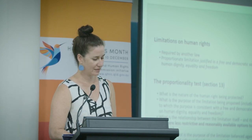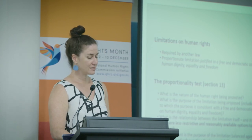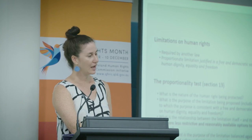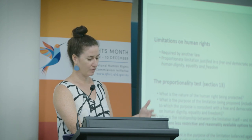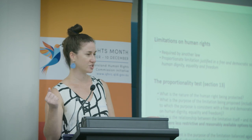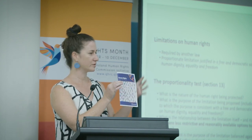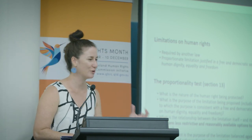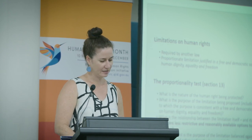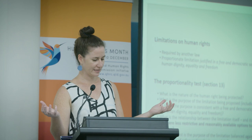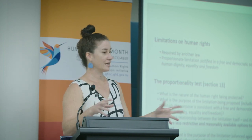The second way human rights can be limited is if it is proportionate and justified. Reasonable limitations can be placed on human rights justified in a free and democratic society based on human dignity, equality and freedom. Working out whether a limitation is justified involves applying a proportionality test — balancing human rights and the proposed limitation. You look at things like the nature of the human right, the purpose of the limitation, and the relationship between the limitation and its purpose. Really importantly, you consider whether there are less restrictive and reasonably available options to achieve that purpose, and then the importance of the purpose as against the importance of safeguarding the human right.